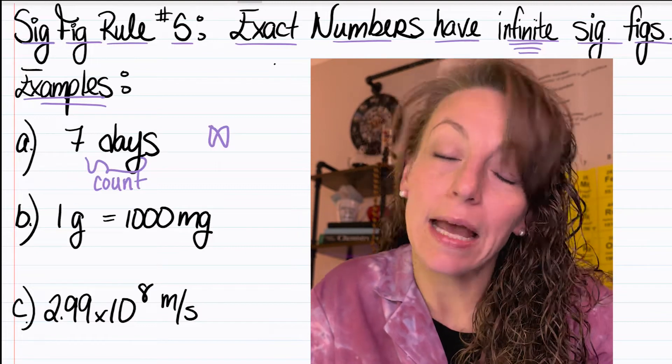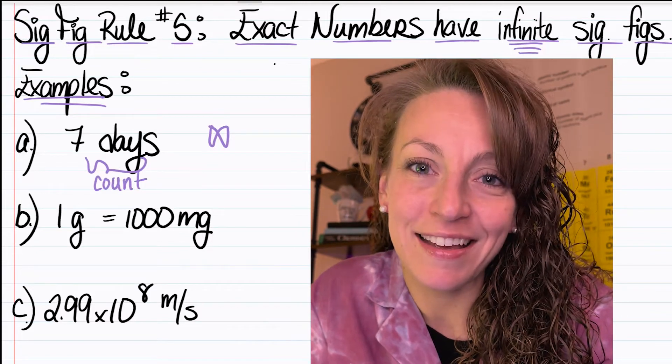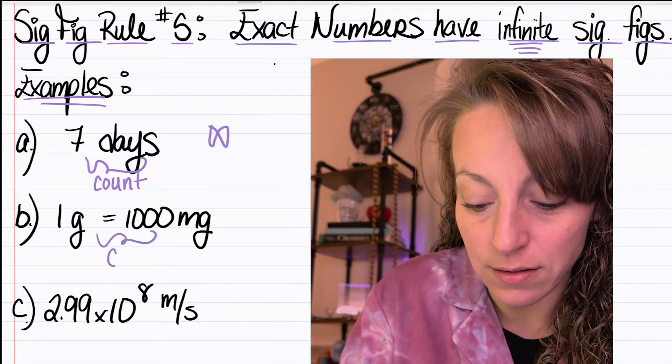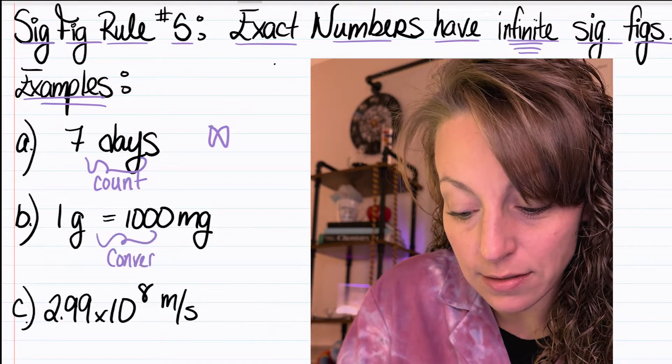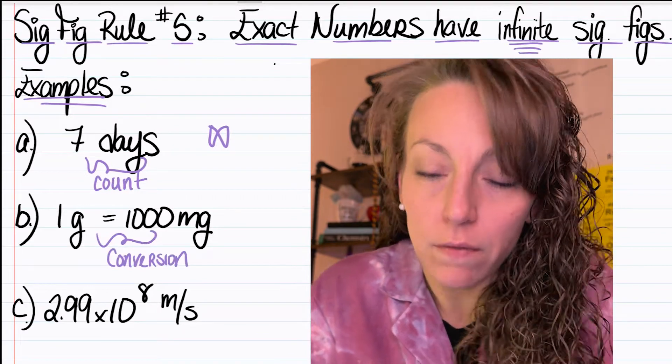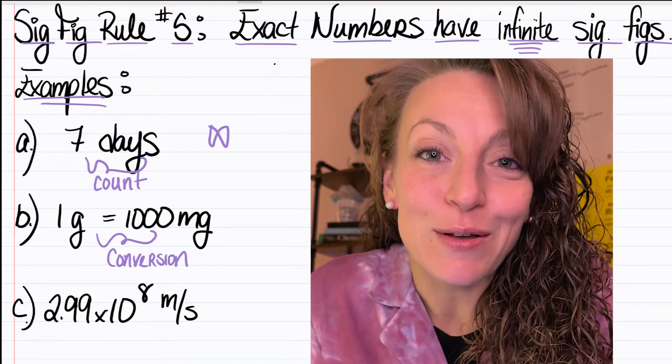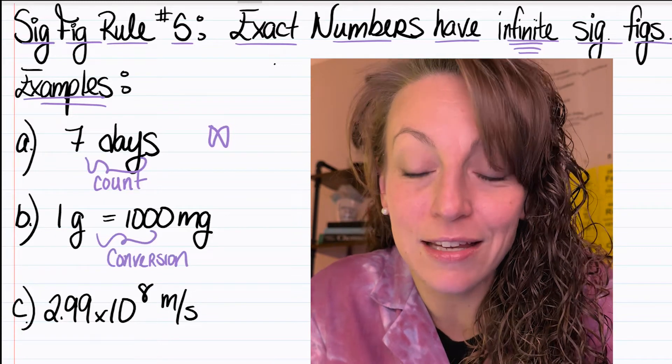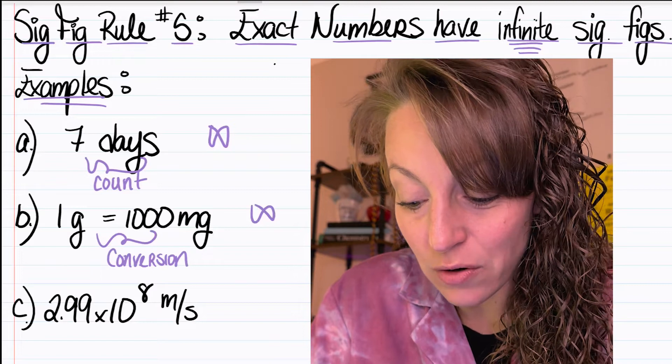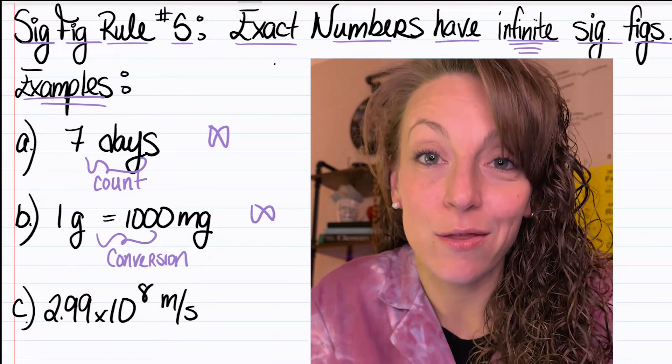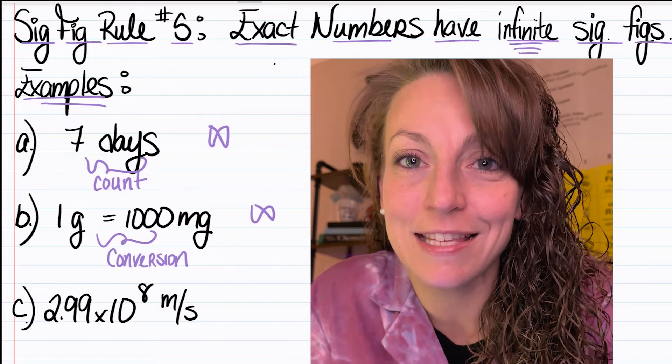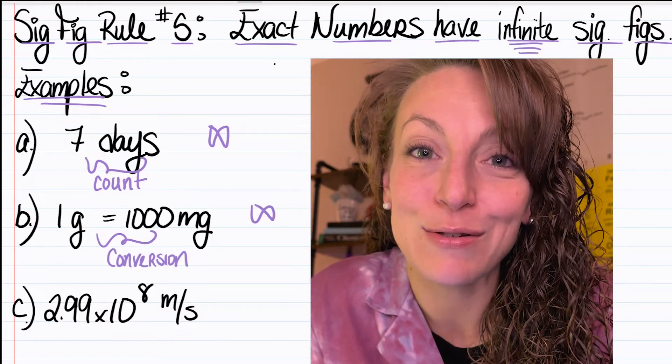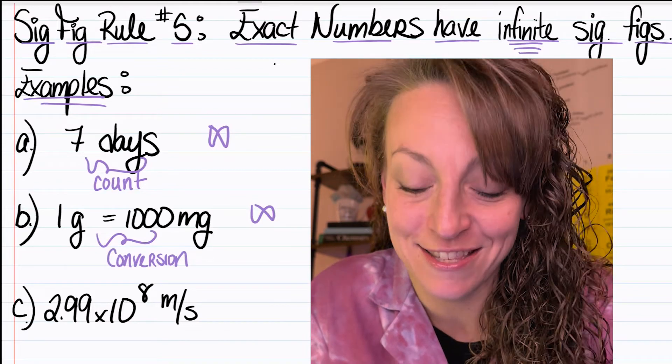Letter B has the second type of exact number. It's a conversion factor. Conversion factors, since they're defined conversion units, will also be considered exact numbers. So when they appear in your calculations, they will also have an infinite number of sig figs. In other words, the most amount of sig figs in that particular calculation, and you can ignore them when totaling the number of significant figures you can have in your answer.